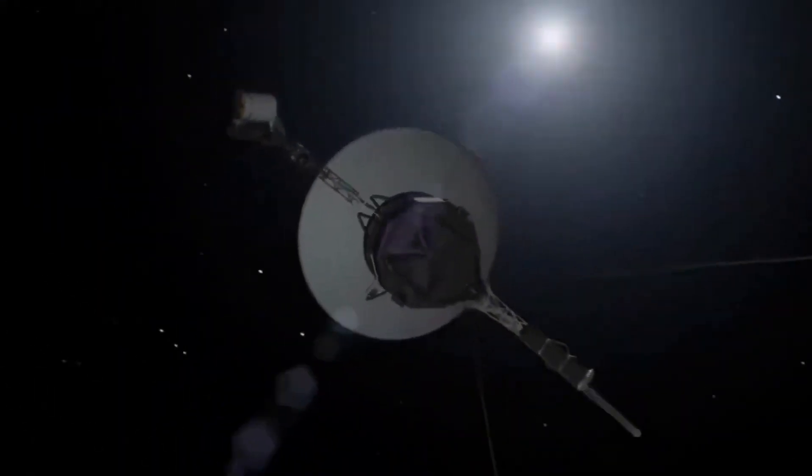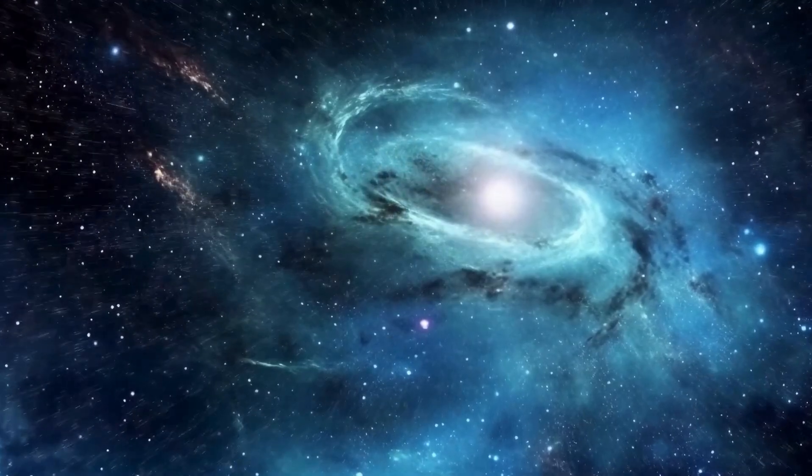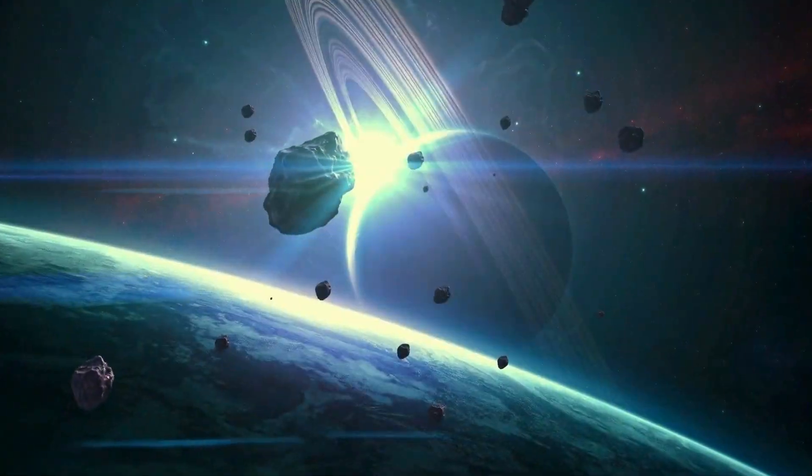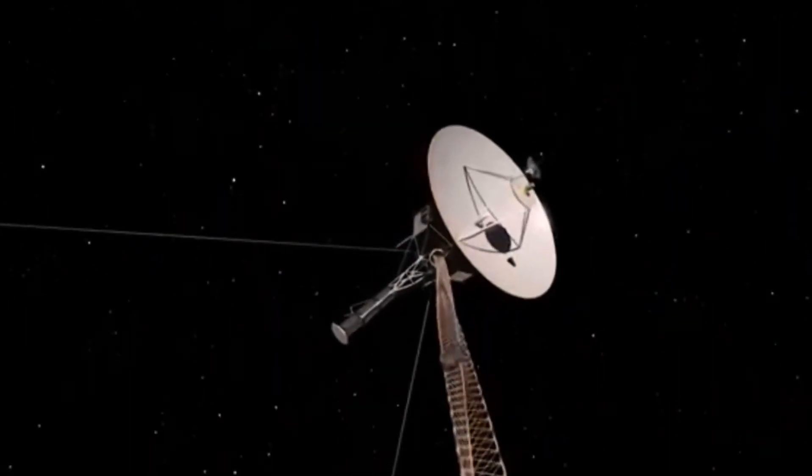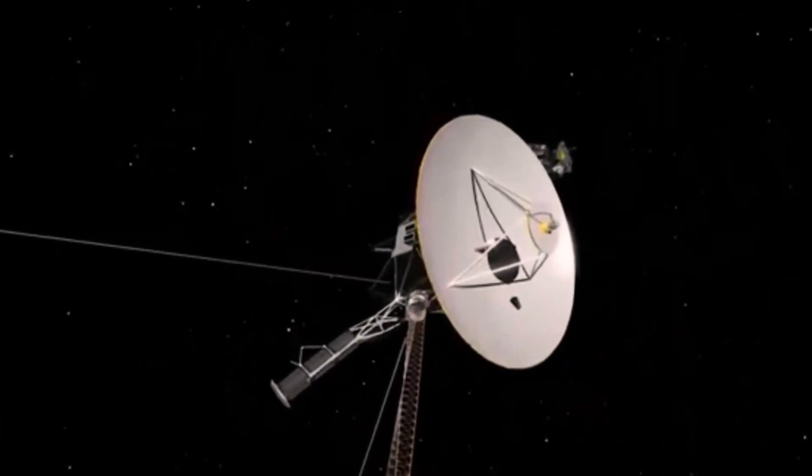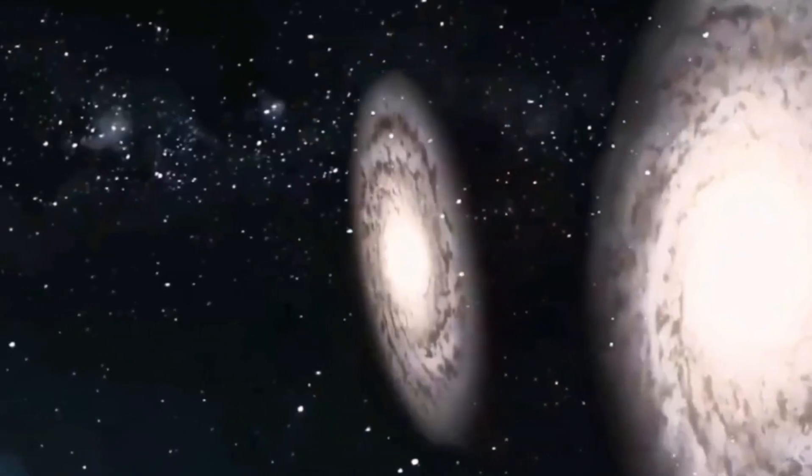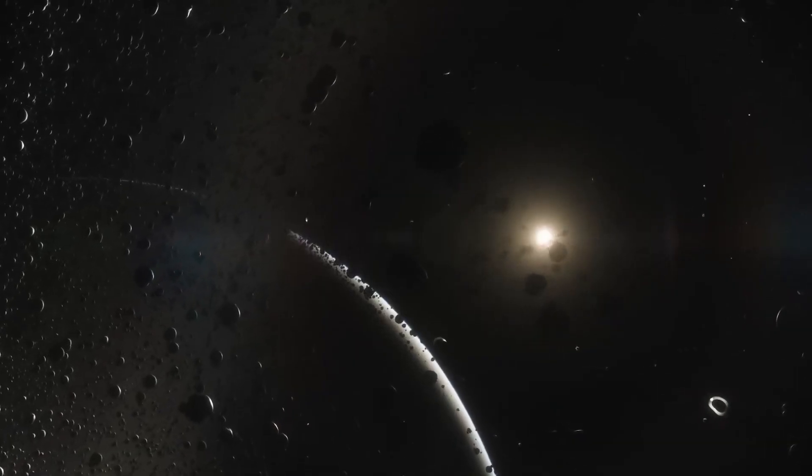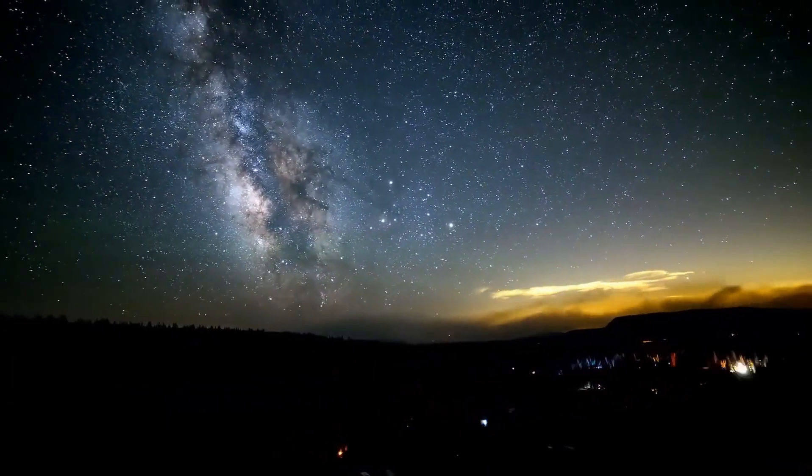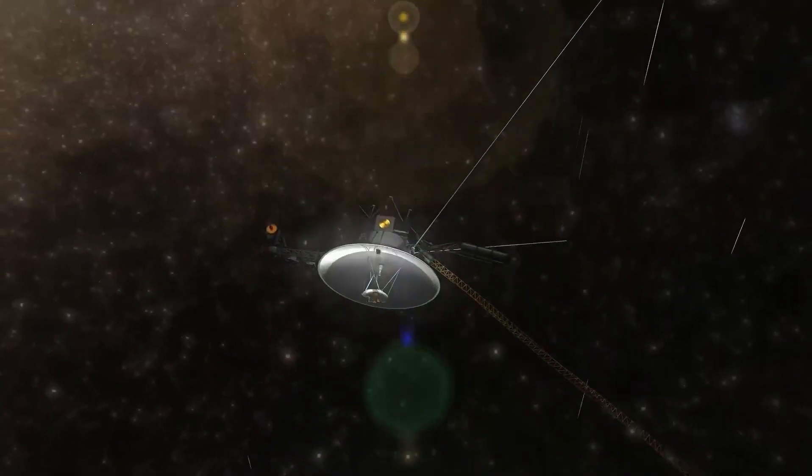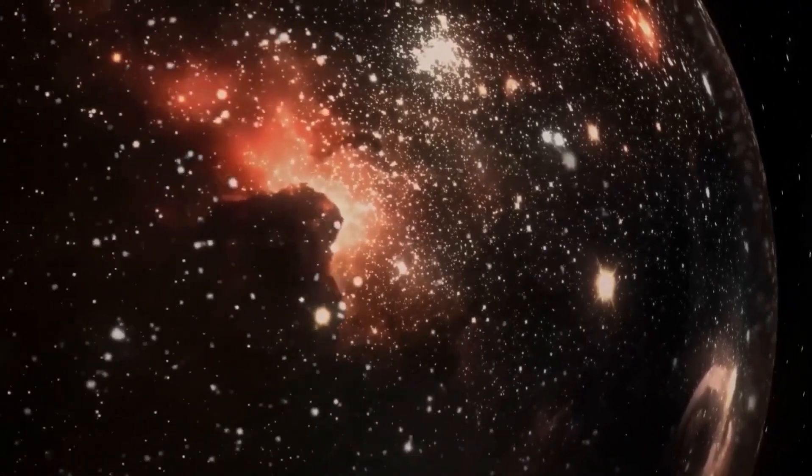Launched in 1977, the Voyager mission consists of two twin spacecraft, Voyager 1 and Voyager 2, designed to explore the outer planets of our solar system and eventually enter interstellar space. Originally intended to perform a grand tour of the outer planets, both probes exceeded their initial goals by journeying past their intended paths and continuing on an interstellar trajectory. Voyager 1 is the farthest human-made object from Earth, while Voyager 2 took a unique trajectory that allowed it to encounter Uranus and Neptune.